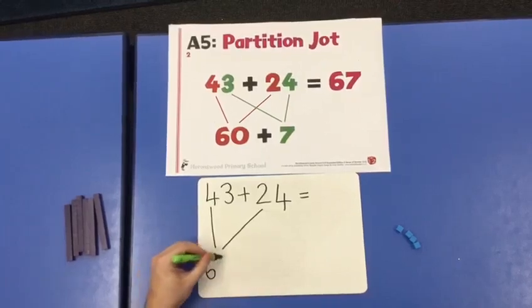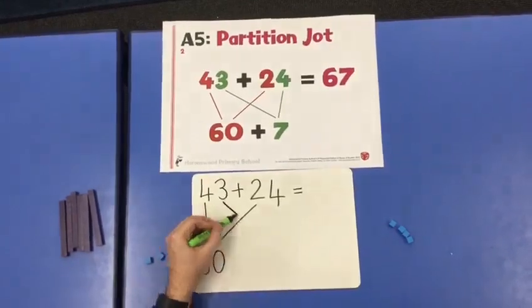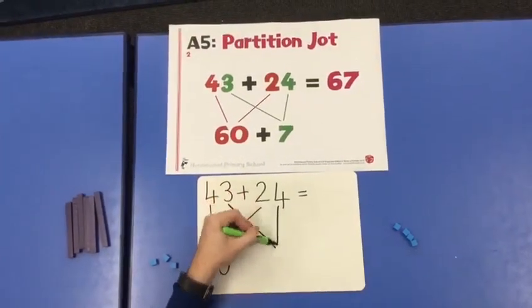6 tens, 0 ones. Then we will draw a line from the ones. So 3 ones add 4 ones.